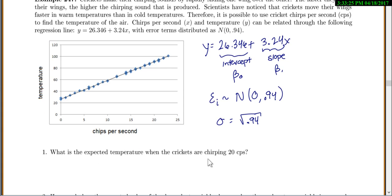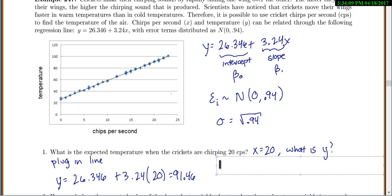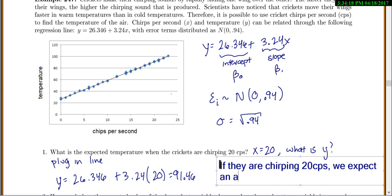So first, what would be your expected temperature when the crickets are chirping 20 chirps per second? This is basically saying x is 20, and what is y? What would we expect y to be if they're chirping at 20 chirps per second? Well, all you're doing for this, if you know x and you want to know y, you just plug it in the line. The equation in the line. So y is going equal to 26.346 plus 3.24 times x, which is 20. And this gives me 91.46.